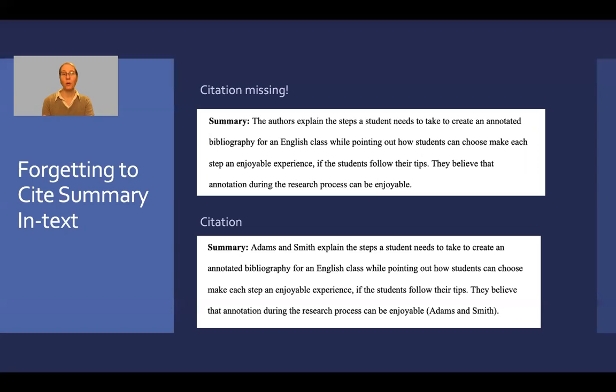In the bottom citation, we have put the author's names, Adams and Smith, in the sentence in the first example. And then in the second sentence, 'they believe that annotation during the research process can be enjoyable,' we're creating the parenthetical citation and putting those keywords in there. The reason why we're doing it for both sentences is as a reader, I can't necessarily guess if you're putting a citation at the end of a paragraph—I don't know if it's retroactive and how many sentences back it goes. So it's always important that you are keeping the keyword or what the source is with the information that you're borrowing from it, so it's clear to readers how those different sources' ideas are integrated into your own writing.